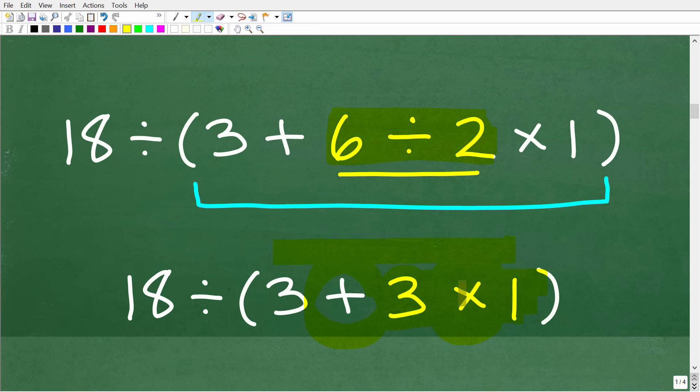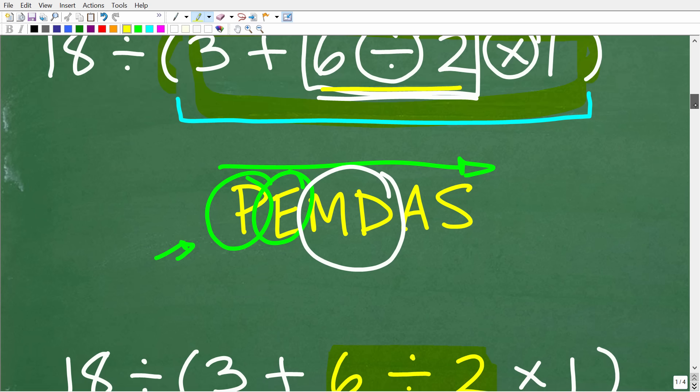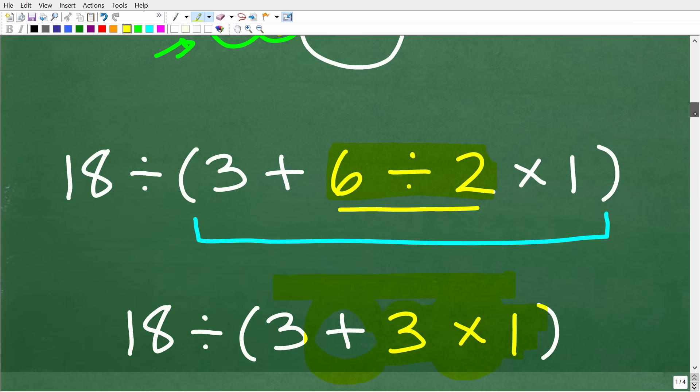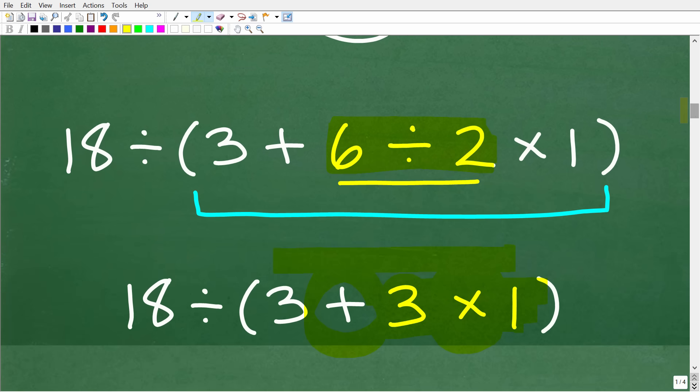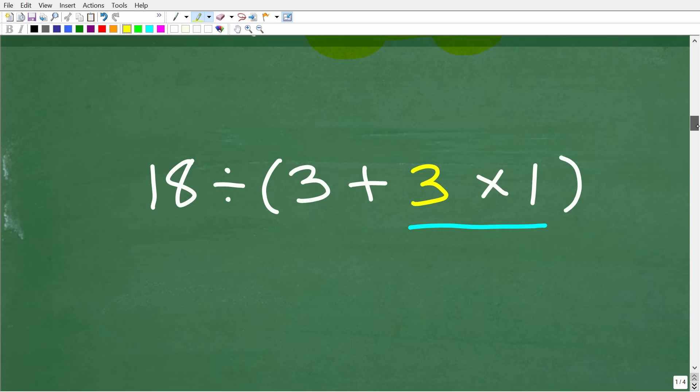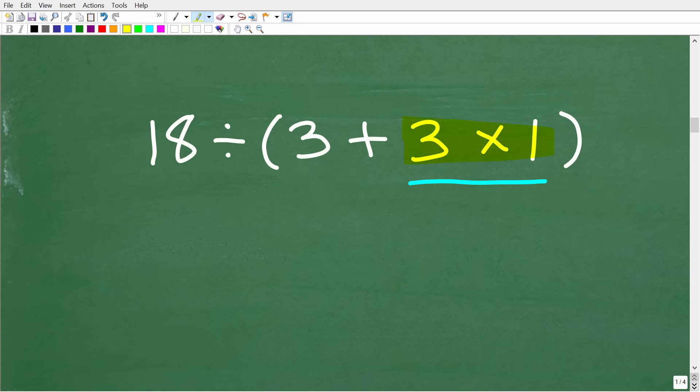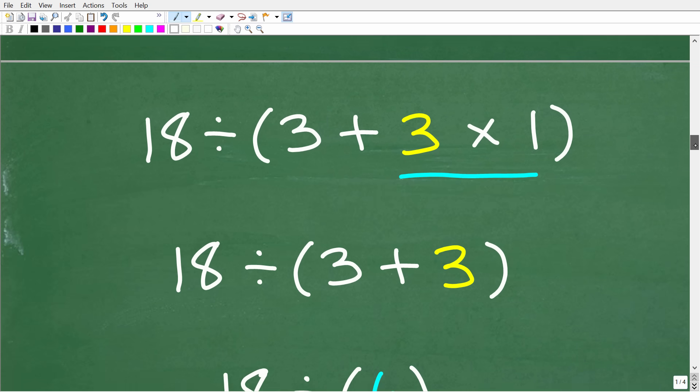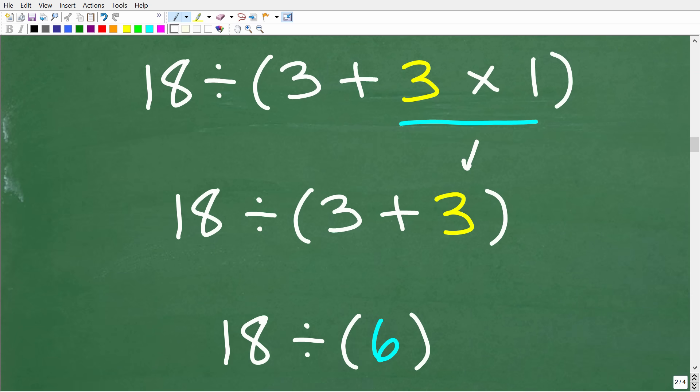So, multiplication is always going to come first before addition when we're thinking about PEMDAS. So, let's go ahead and finish this problem up. So, we have 18 divided by parentheses 3 plus 3 times 1. So, we're going to do the multiplication next. All right. So, again, we're not done with the parentheses. So, 3 times 1, of course, is what? Well, the answer is 3. So, 3 times 1 is 3. And now we're down to 3 plus 3, which, of course, is what? Well, the answer is 6.